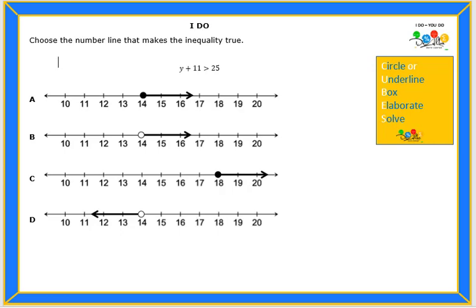Let's start by reading the I Do problem. Choose a number line that makes the inequality true. Y plus 11 is greater than 25.